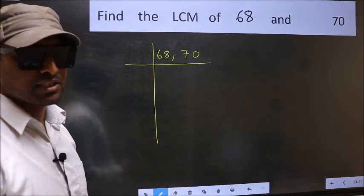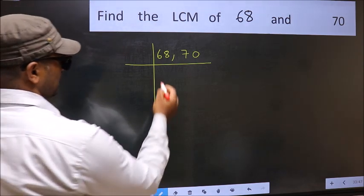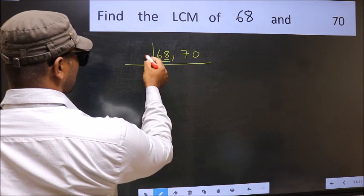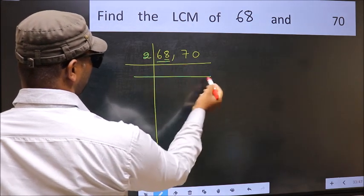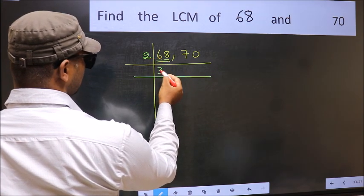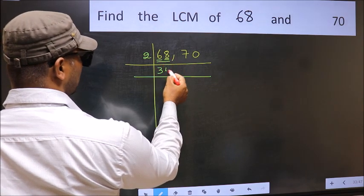Now focus on the first number which is 68. In this number, last digit is 8, so take 2. First number 6, when do we get 6 in 2 table? 2 times 3 is 6. The other number 8, when do we get 8 in 2 table? 2 times 4 is 8.